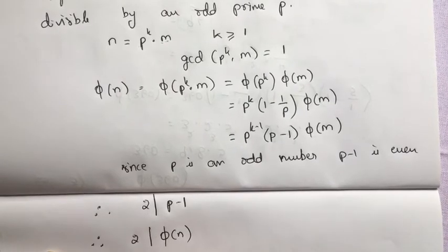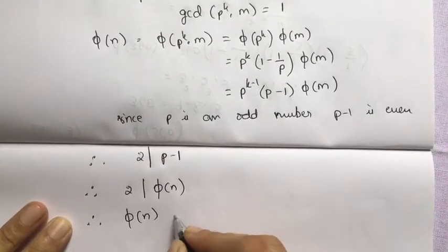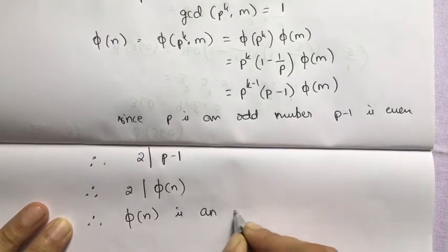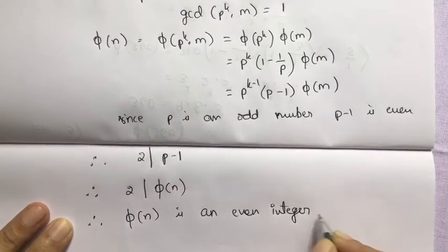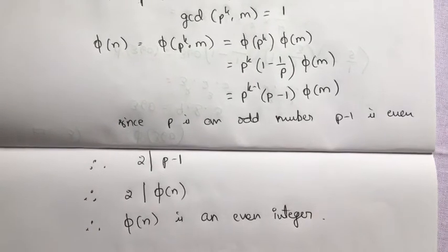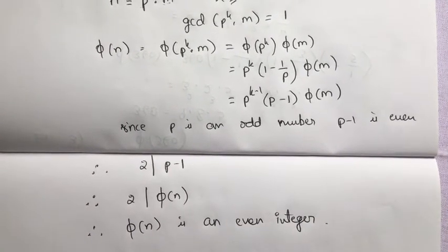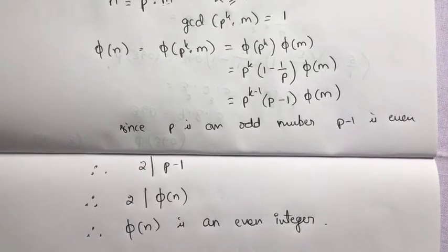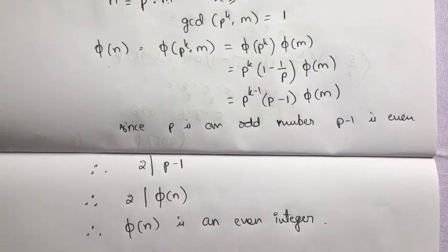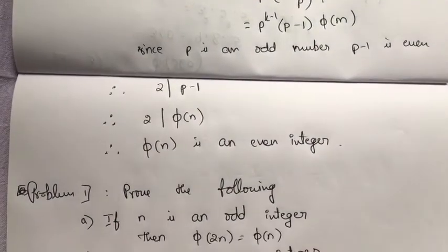Therefore 2 divides phi(n), so phi(n) is an even integer. These theorems help us solve problems based on calculating phi(n).